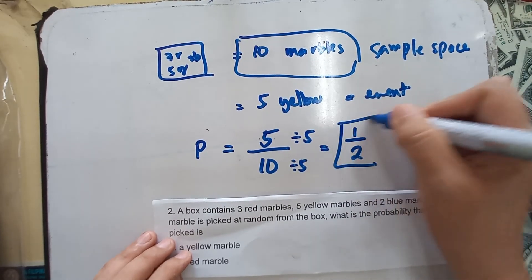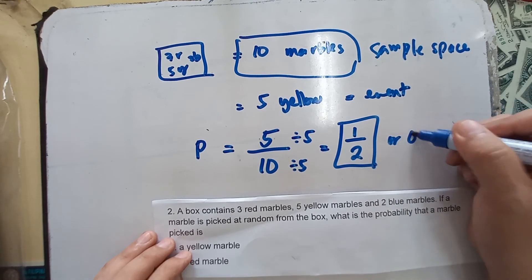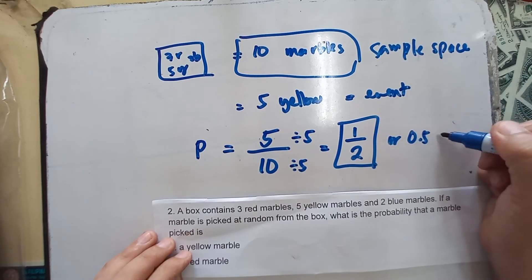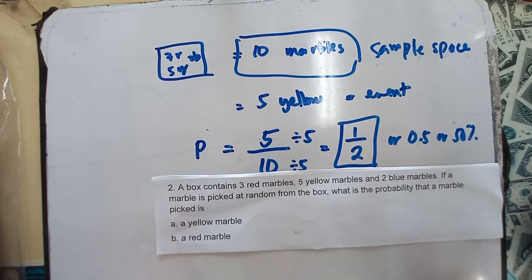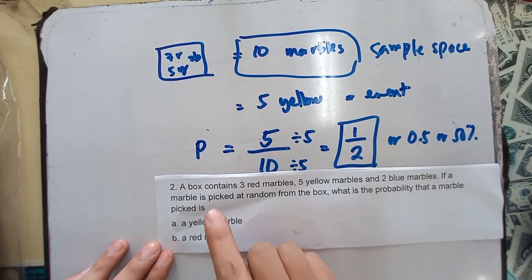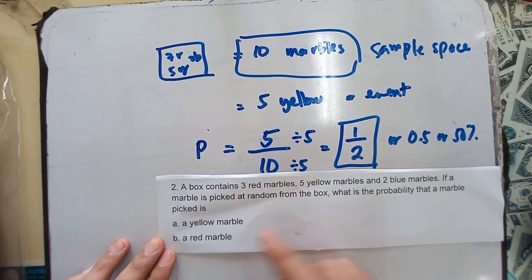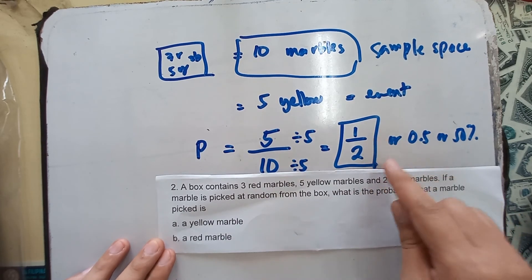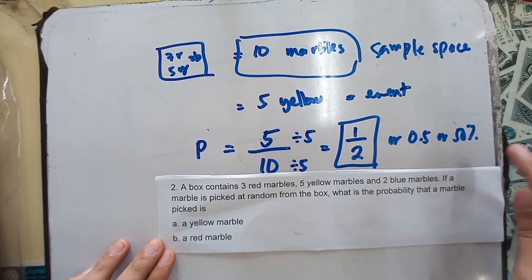Your probability is one half, or it could be point five, or fifty percent. It means that the probability that the marble picked is a yellow marble is one half, or point five, or fifty percent.